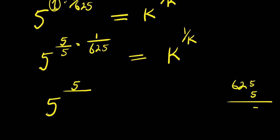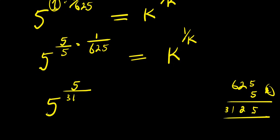5 times 5 divided by 5 is 5. 5 times 2 is 10, plus 2 is 12. 5 times 6 is 30, plus 1 is 31. So this gives us 1 over 3125.